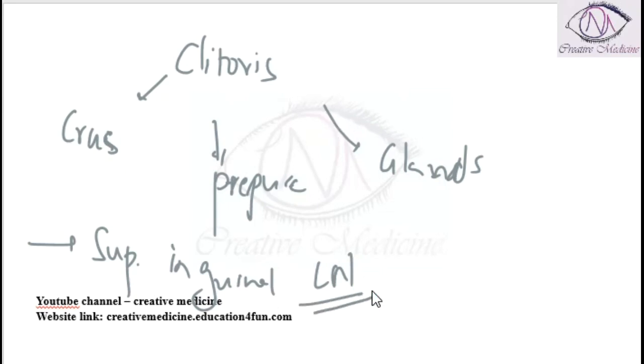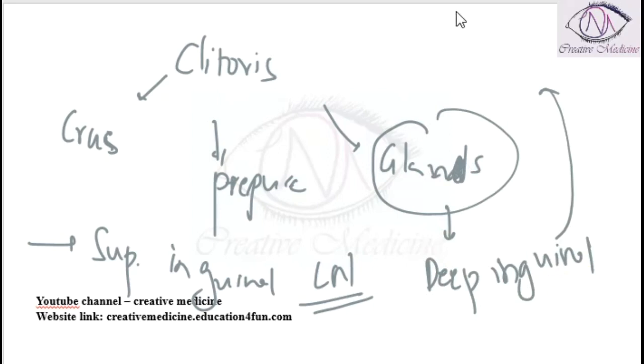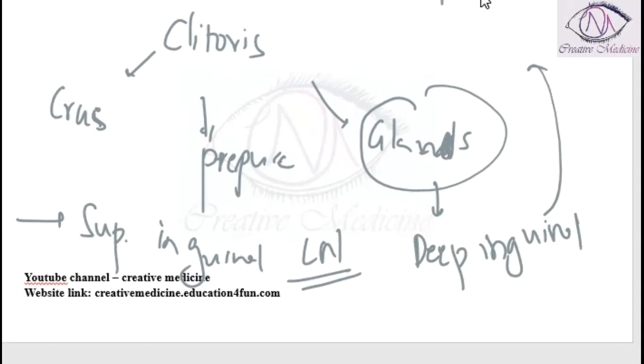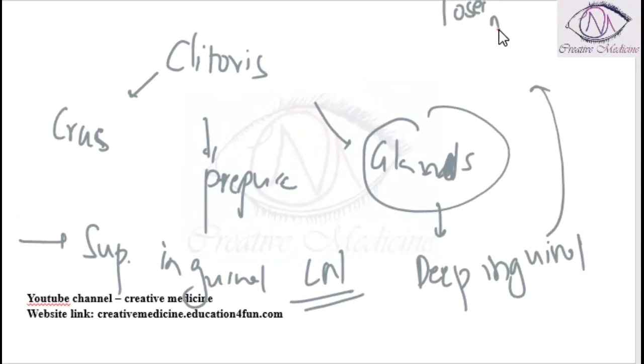Glans clitoris alone drains into the deep inguinal lymph node, also called the lymph node of Cloquet or lymph node of Rosenmuller. The external genital organs in females are also called vulva or pudendum.